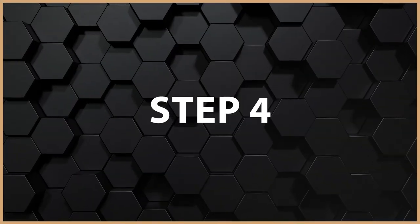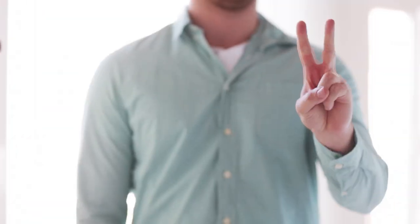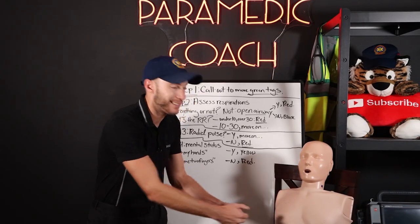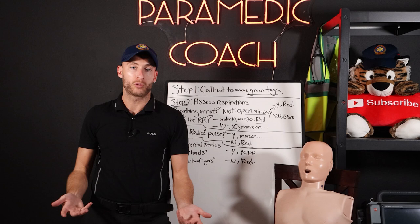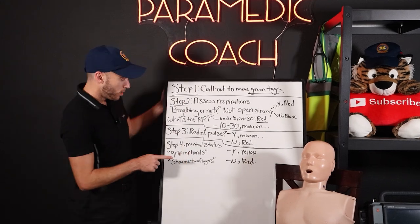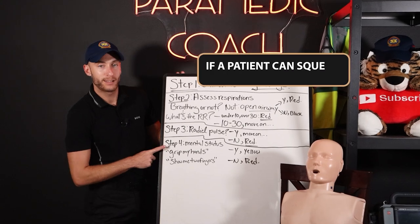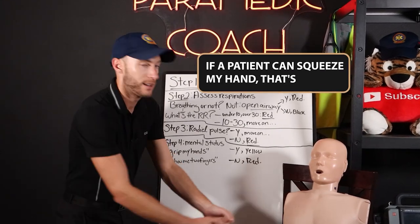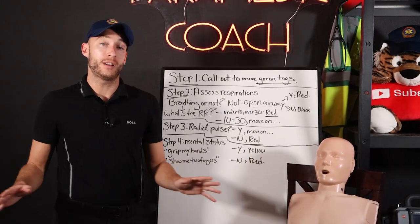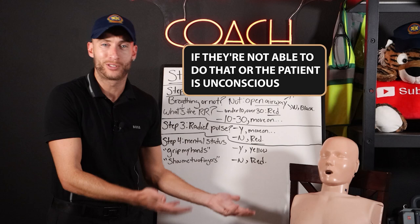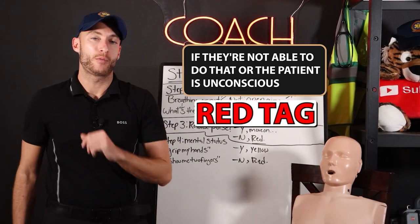Step four is mental status. I would tell the patient: can you show me two fingers? Can you show me three fingers? Can you grip my hand? These are simple commands people can follow even in chaotic situations. If they are able to follow those commands, we tag yellow. If they're not able to, or the patient is unconscious or unresponsive, we tag red.